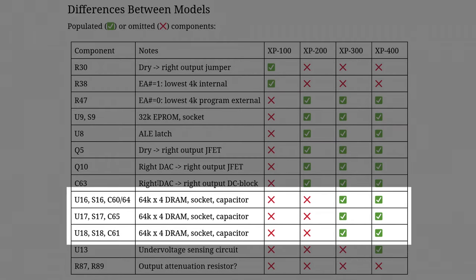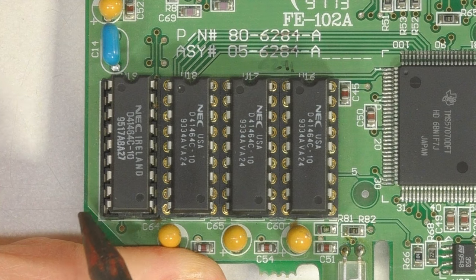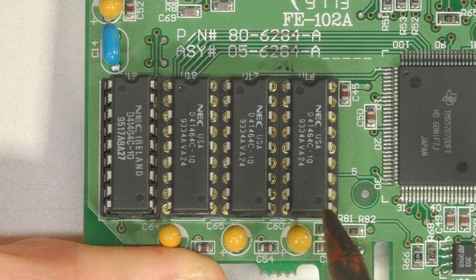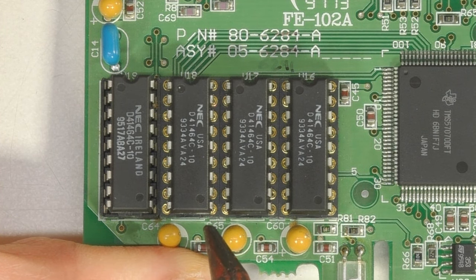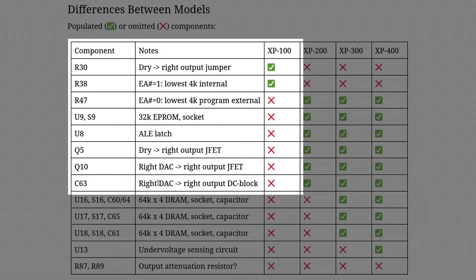The XP300 and 400 quadruple the RAM because those pedals have some delay and reverb effects that require larger audio buffers. Some XP100s had a microcontroller chip with built-in program ROM, so they left out the EEPROM chip and related components. And all the XP100s have a few different components that route the dry or unprocessed audio signal to one of the output jacks, instead of having stereo outputs like the other pedals.